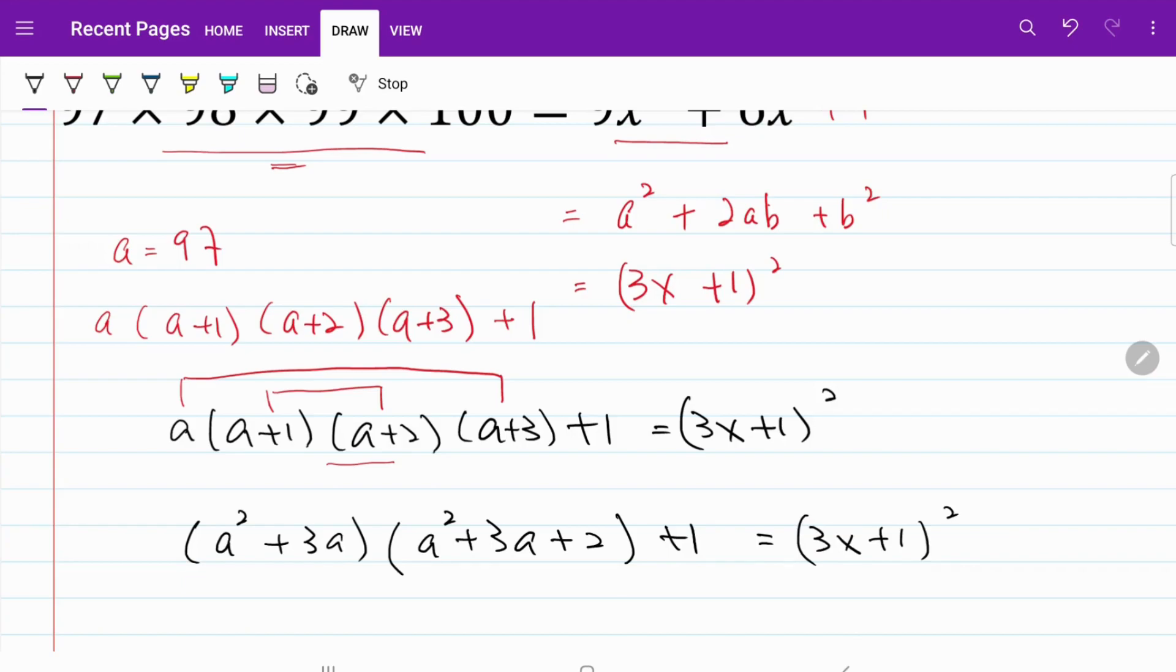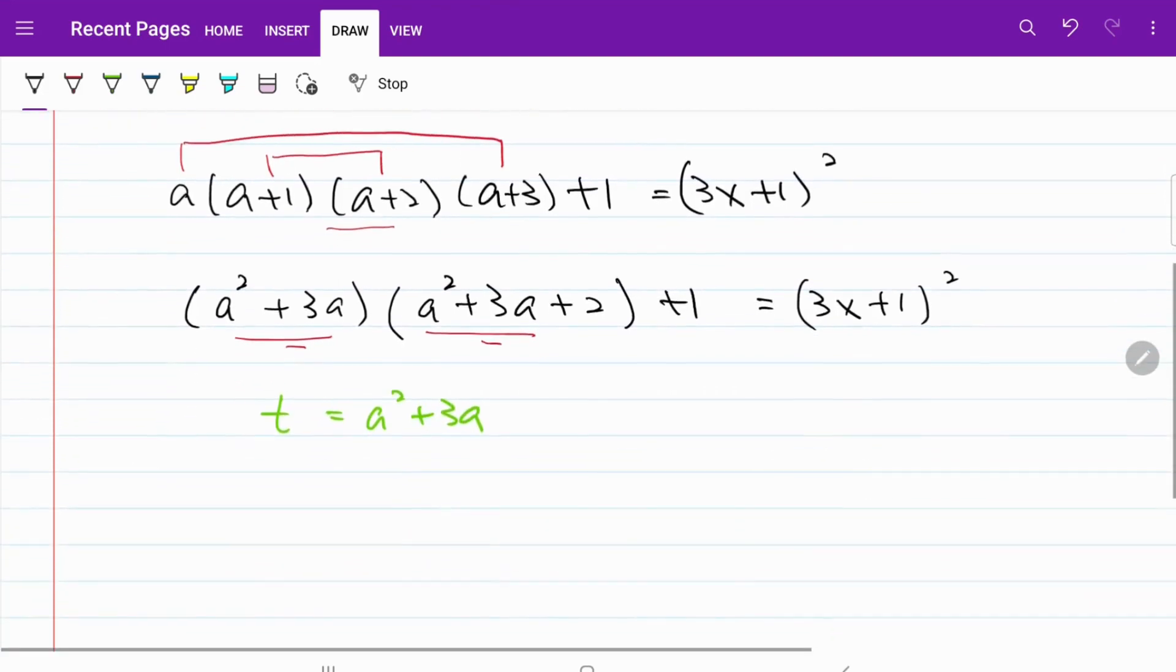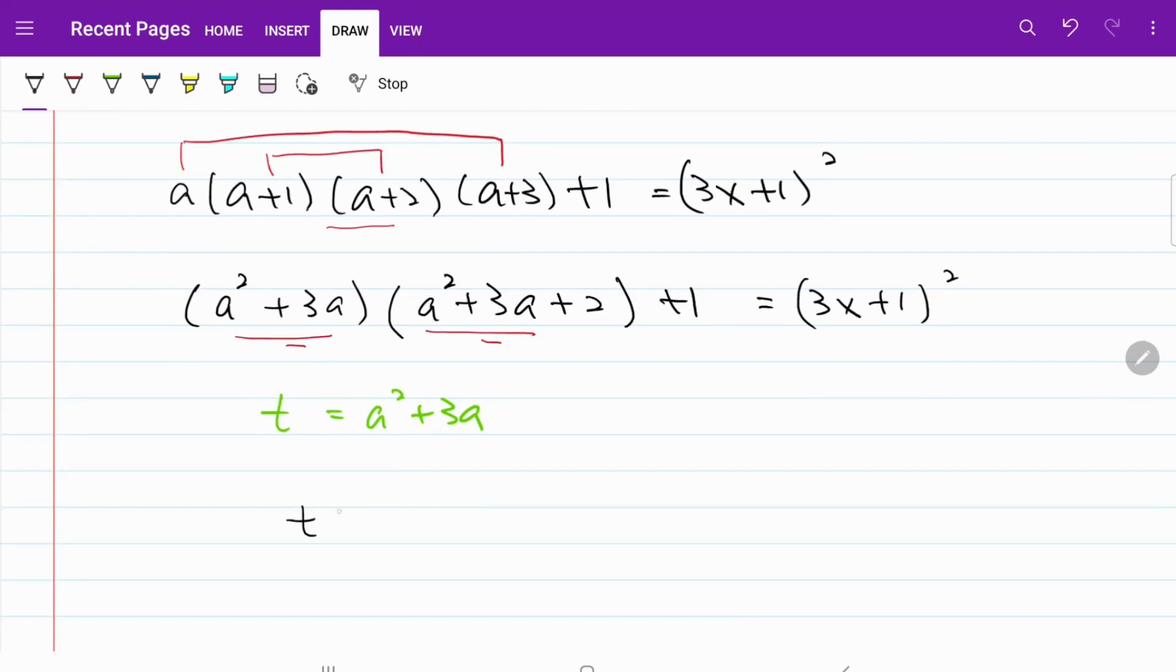And if we do that, we notice something very interesting. We have a square plus 3a here and then another a square plus 3a here. So, what if we substitute a plus 3a with something else? Let's say I'm going to let t equal to a square plus 3a. So, from there, my expression becomes t multiplied by t plus 2 plus 1 is equal to 3x plus 1 bracket square.